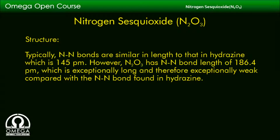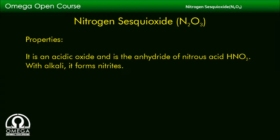Typically, N-N bonds are similar in length to that in hydrazine, which is 145 picometers. However, N2O3 has an N-N bond length of 186.4 picometers, which is exceptionally long and therefore exceptionally weak compared with the N-N bond found in hydrazine.